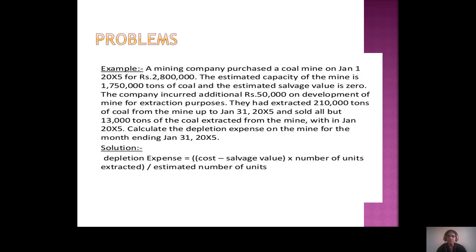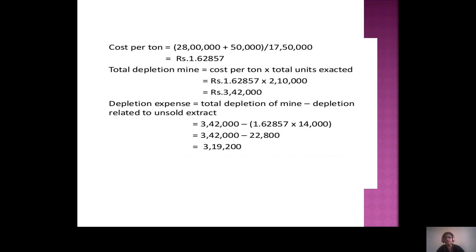Calculate the depreciation expenses of the mine for the month ending January 31st. The formula is: depreciation expenses = (cost minus salvage value) × (number of units extracted / estimated number of units). Cost per ton = (28 lakhs + 50,000) / 17,50,000 = rupees 1.62857.